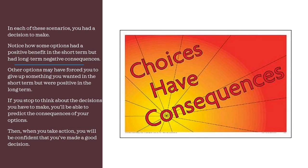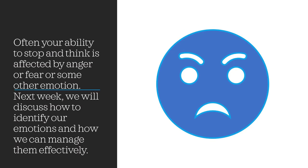In each of these scenarios you had a decision to make. Notice how some options had a positive benefit in the short term but a long-term negative consequence, while other options may have required giving up something short-term but were positive long-term. If you stop and think about the decisions you have to make, you will be able to predict the consequences of your options and act with confidence. Often our ability to stop and think is affected by anger, fear, or sadness — that's why next week we will discuss how to identify our emotions and manage them effectively.